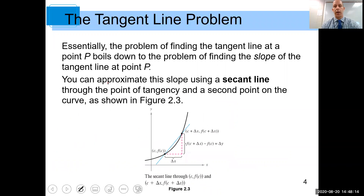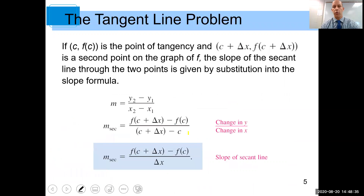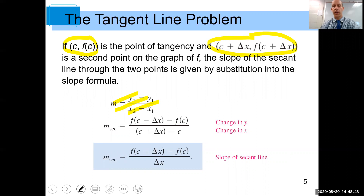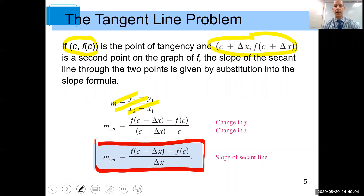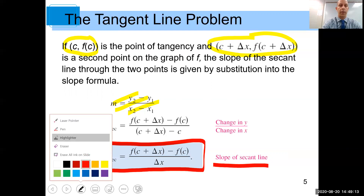Here we have a curve — this black curve — and a blue tangent line drawn going through two points of that curve. The two points of intersection are found here and here. To find the slope of that secant line, you use the slope formula from algebra. Plugging in those two points and simplifying, we get that the slope of the secant line is found by taking f of c plus delta x, minus f of c, all over delta x.